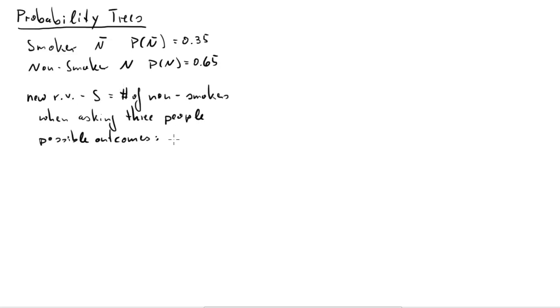We are looking at random variables where we are asking whether someone is a smoker or a non-smoker. We will label the response non-smoker n and smoker n bar for the opposite of a non-smoker. You can see the probabilities here. We will be looking at a new random variable which we call s, which will describe out of 3 people we asked the number of non-smokers we have.